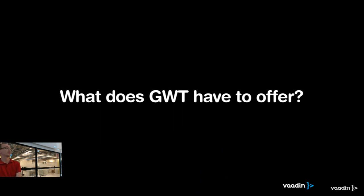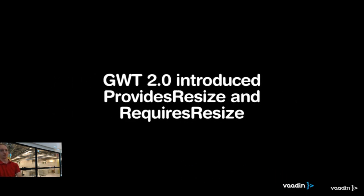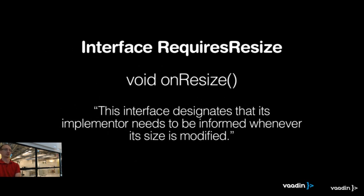Vaadin builds upon GWT, so surely GWT solves this problem if HTML doesn't. Actually, GWT has a solution starting from GWT 2.0: there's something called 'provides resize' and 'requires resize' that you can use in your widgets. As the specification says, 'requires resize' is really what we need — it's a method that's called when the element is resized. The interface designates that its implementer needs to be informed whenever its size is modified. That's exactly what we're looking for.